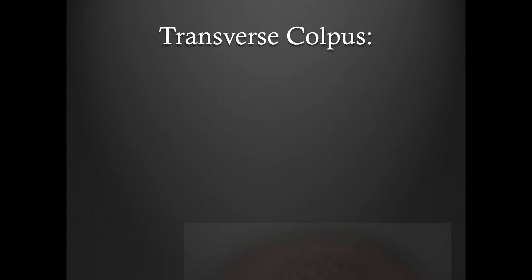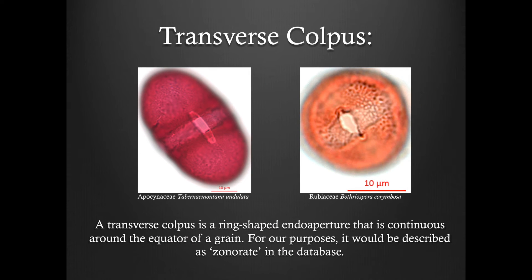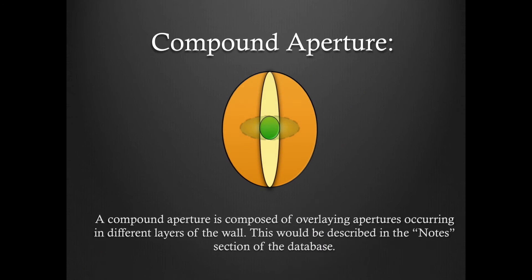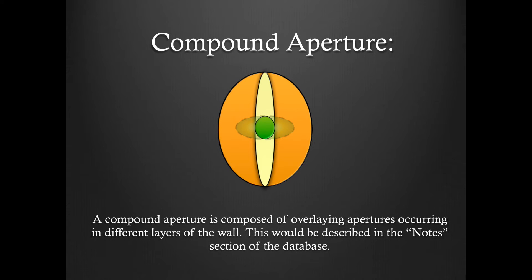A transverse culpus is a ring-shaped endoaperture that is continuous around the equator of the grain. For our purposes, it would be described as zonerate in the database. A compound aperture is composed of overlaying apertures occurring in different layers of the wall. This would be described in the notes section of the database.